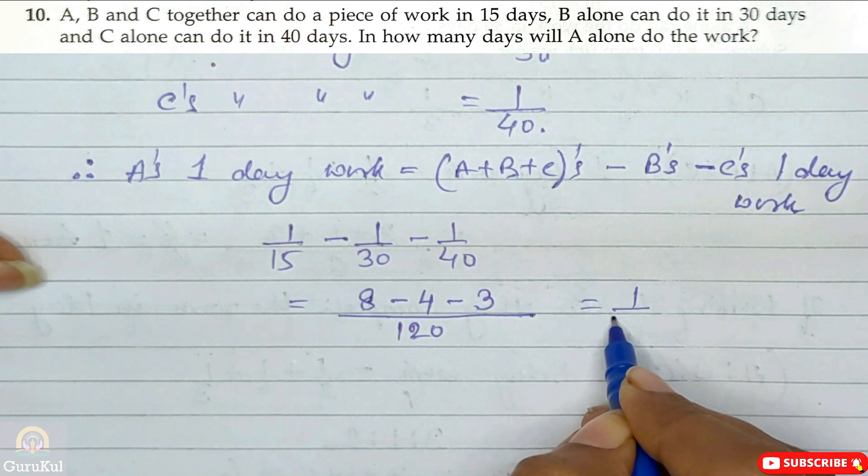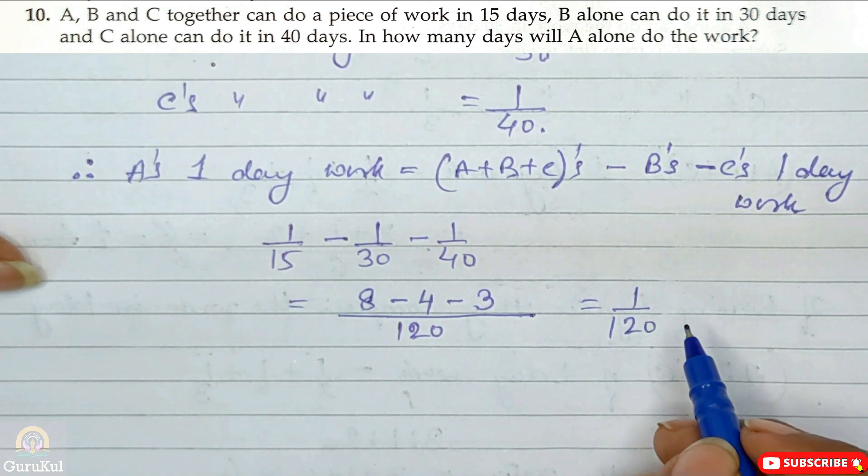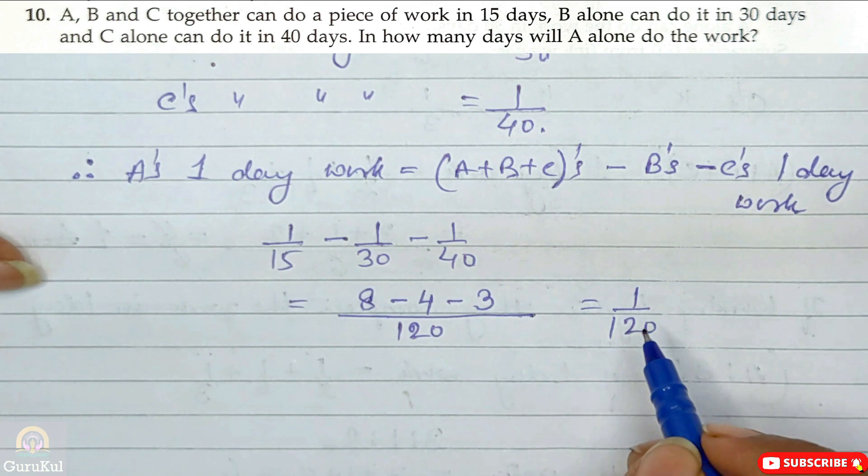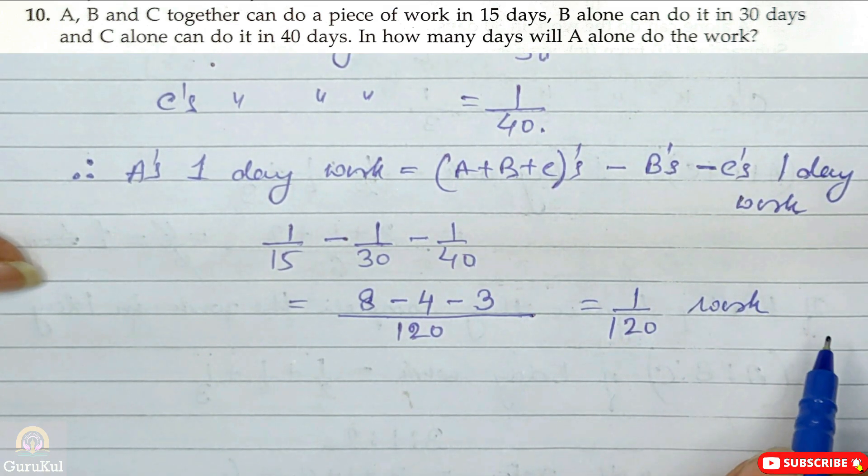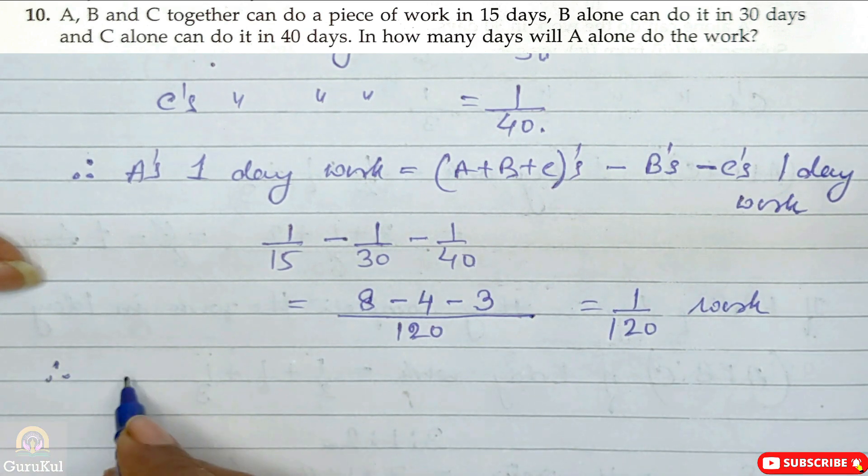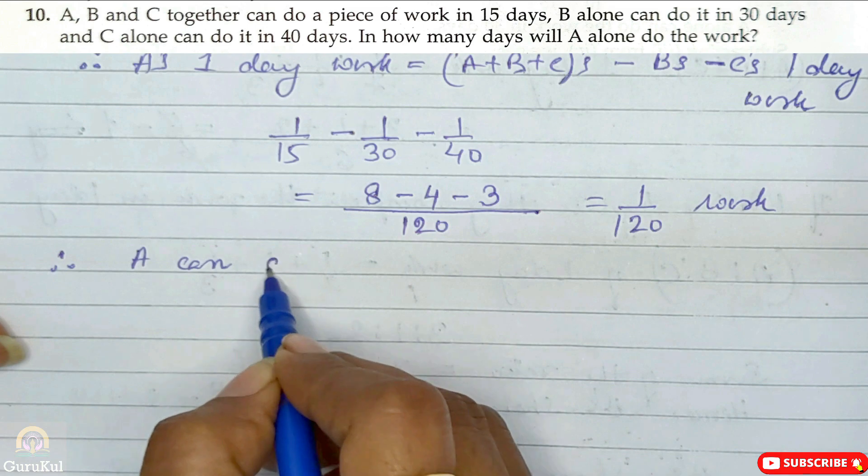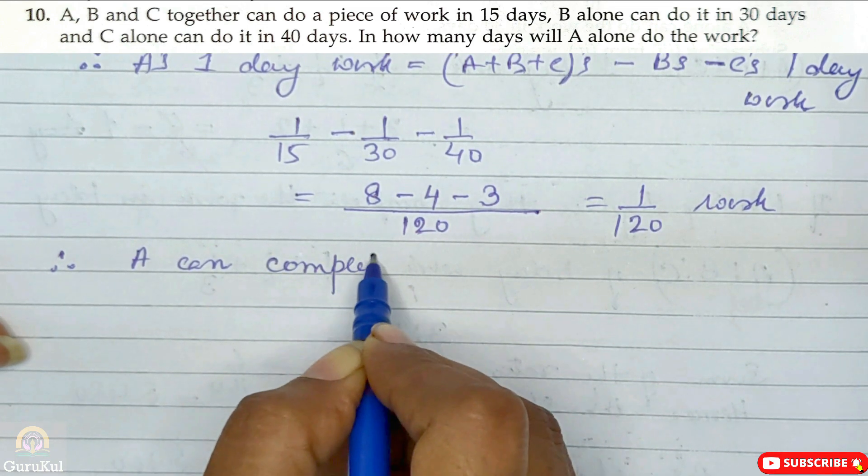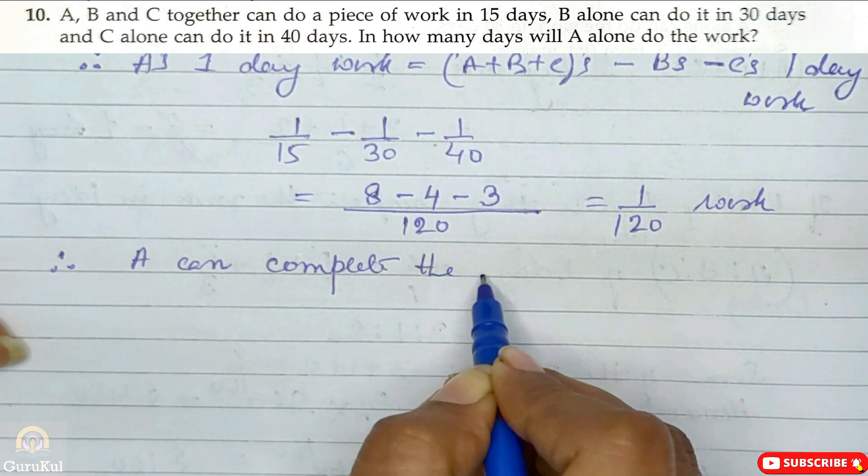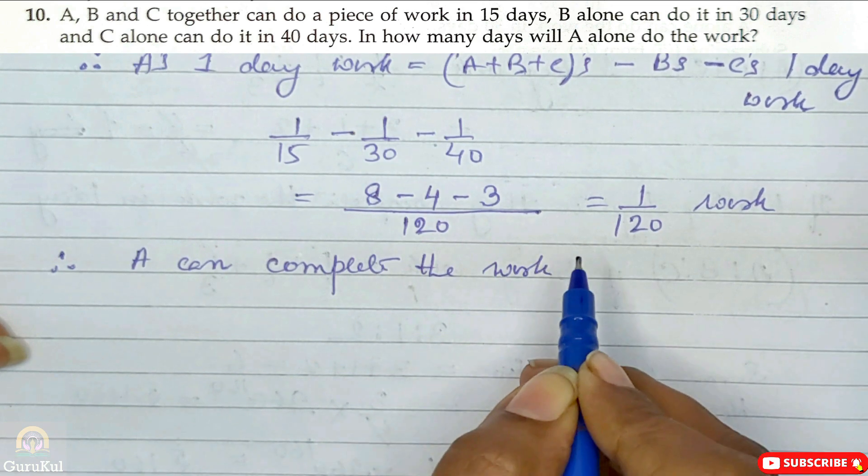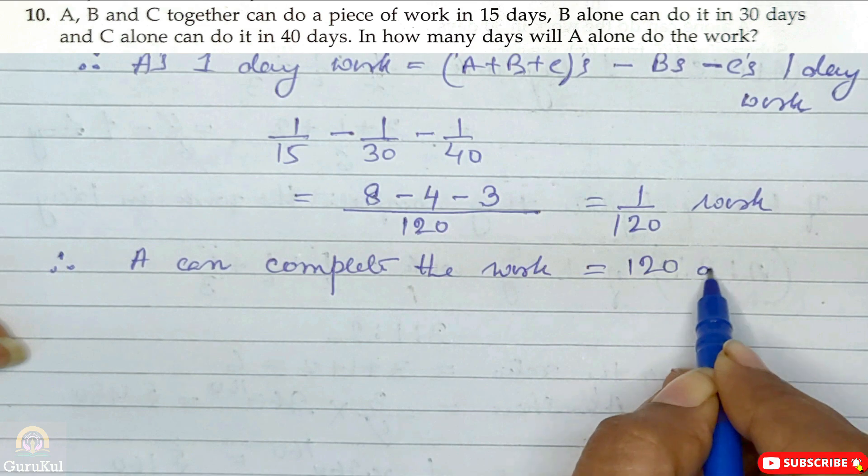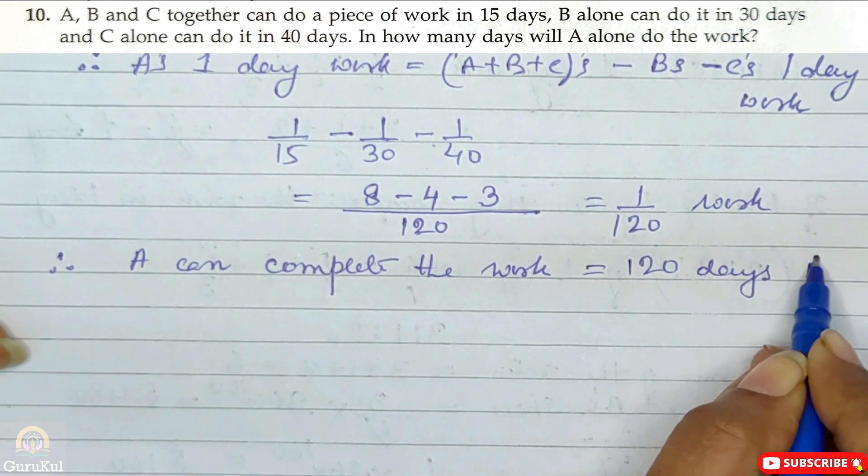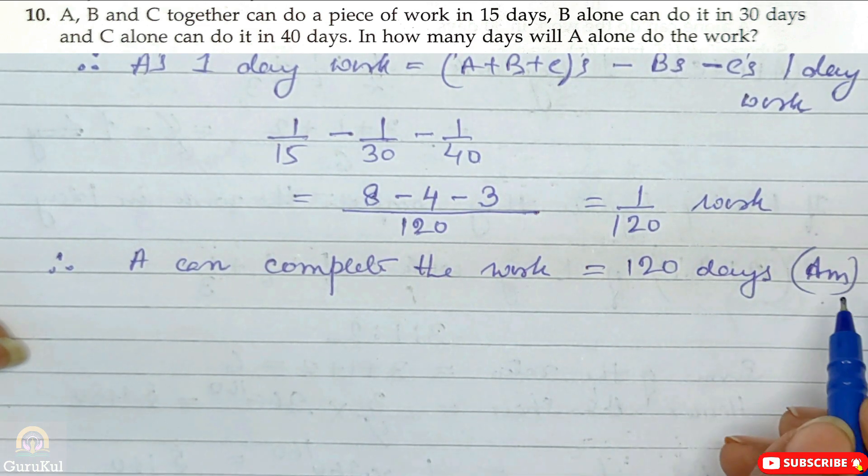So it will be 8 minus 4 minus 3, which is 1 by 120. So A, ek din mein 1 by 120 work karta hai. Therefore, A can complete the work in, reciprocal kar dijiye, 120 days is the answer.